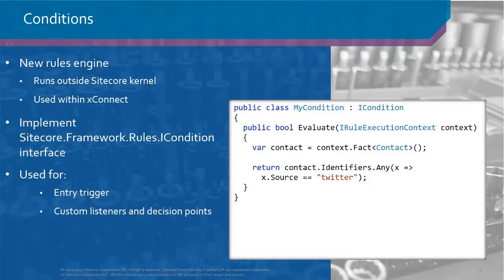The reason is that we want things to be non-web and omnichannel. The old rules engine was very tightly bound to the Sitecore kernel and the content tree, which the new one is not. The new engine is designed to be very portable — slim and specific, doing one thing and one thing only.